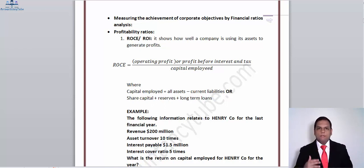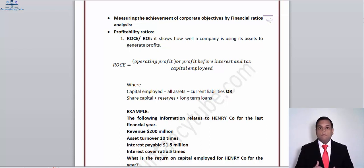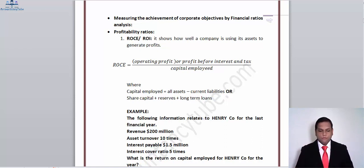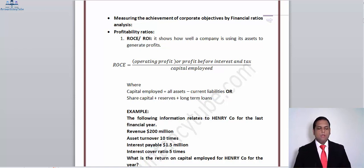Hello everyone and welcome to part 2 of chapter number 1. In this video we are going to cover one of the most important topics of FM — ratio analysis. The exam significance of this topic is around 5 to 8 marks, and none of the attempts have passed in which the examiner has not tested this topic. I have compiled ratios from across the flavors into this chapter for better understanding. Ratios are broadly classified into four categories: profitability, liquidity, gearing, and investor ratios.